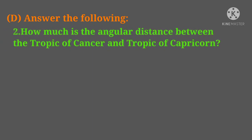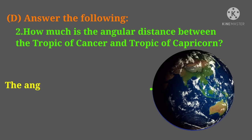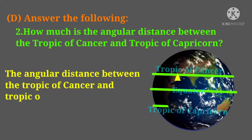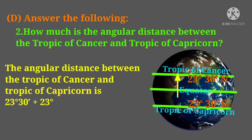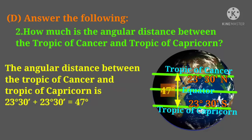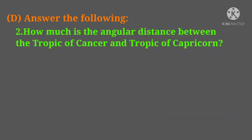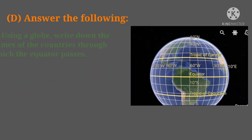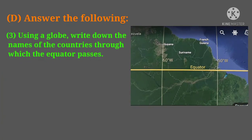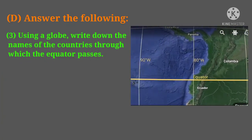Second question: how much is the angular distance between the tropic of Cancer and the tropic of Capricorn? The angular distance between the tropic of Cancer and the tropic of Capricorn is 47 degrees.